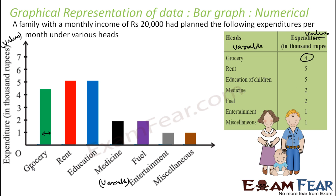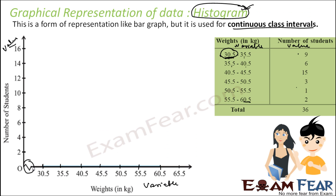In an earlier example, if you start from 0, 1, 2, 3, 4, 5, you don't need a break. But since we are starting from 30.5, this short distance cannot represent 30.5. If this small distance represents 0.5, it cannot also represent 30.5 — that would require it to be 61 times bigger. That is why we put a kink here.